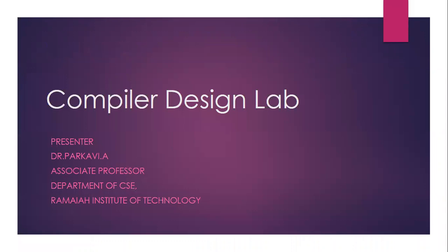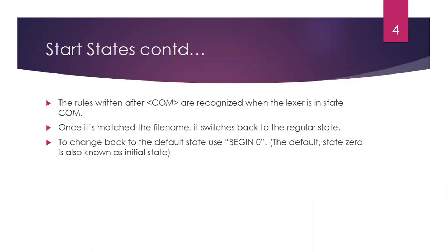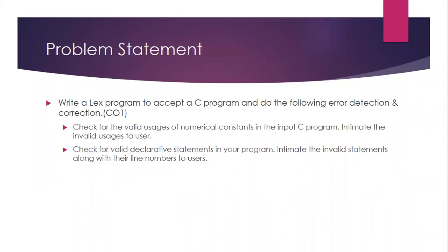For the compiler design lab, for the fourth problem A and B part, we will just see. The problem statement is: write a lex program to accept a C program and do the following error reduction and correction. This is mapped to course outcome 1 (CO1). Part A: check for valid usages of numerical constants in the input C program and intimate the invalid usages to the user. Part B: check for valid declarative statements in your program and intimate the invalid statements along with their line numbers to the user.